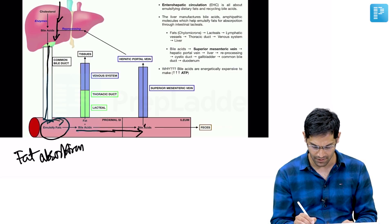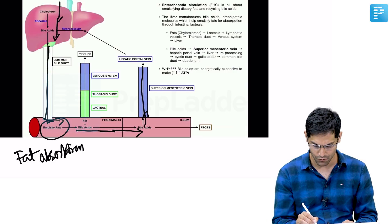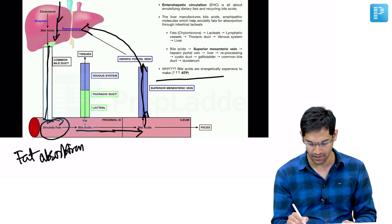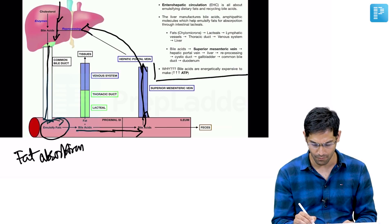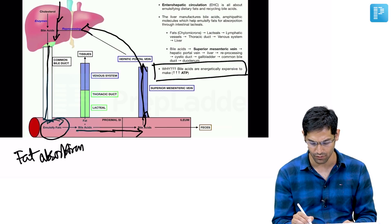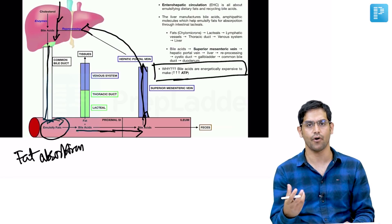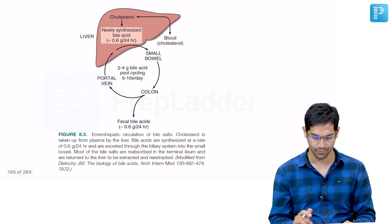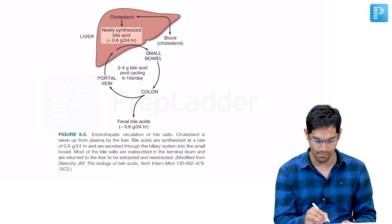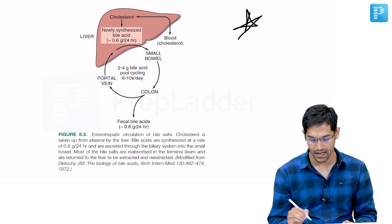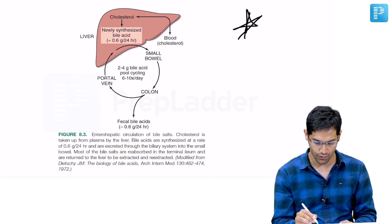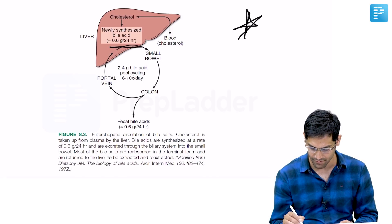Once fat is absorbed, bile acids travel from the proximal small intestine to the ileum where they are absorbed against the concentration gradient, then pass into the portal vein and return to the liver. Bile acid reabsorption is important because formation of bile acid is difficult, requiring a lot of ATP — so the body has developed this mechanism to conserve bile acids. This is an important slide with exam-relevant numbers.